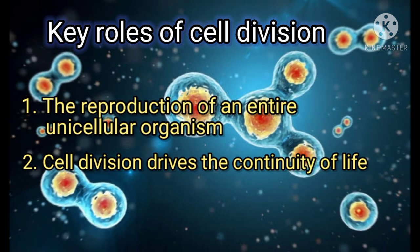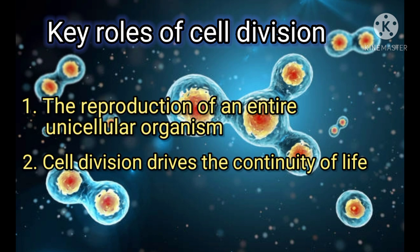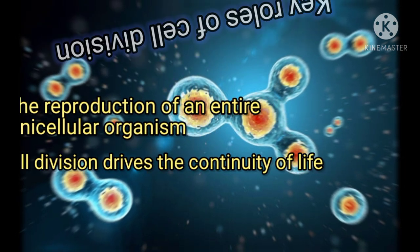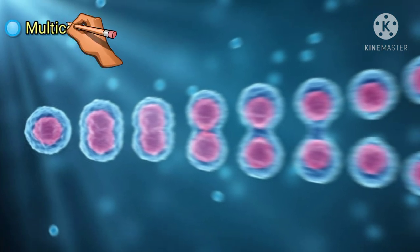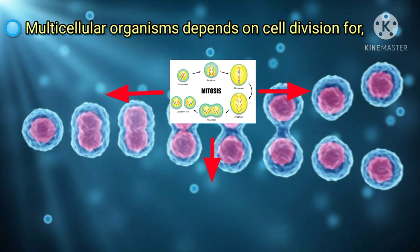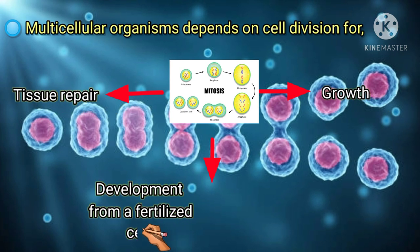Mitosis is a type of cell division that leads to continuity of life. If we consider a single-cell eukaryote, it divides into two cells by mitosis. Development from the fertilized egg, tissue repair, and growth are the three main functions of mitosis in multicellular organisms.